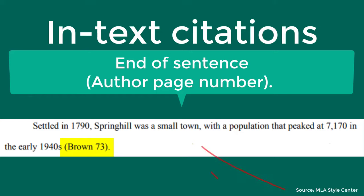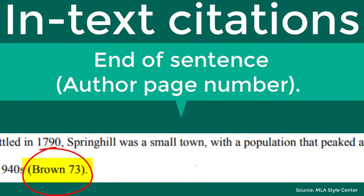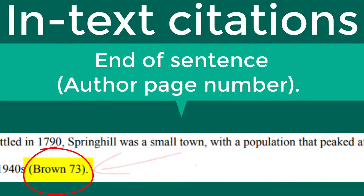In this case, you'll write a statement that includes information from a source — meaning information that is not your own — then you include your in-text citation. This is an open parentheses, the author's last name, and the page number. Close the parentheses, then put a period to end the sentence. Note that the period is after the citation, so the citation is considered to be part of your sentence.